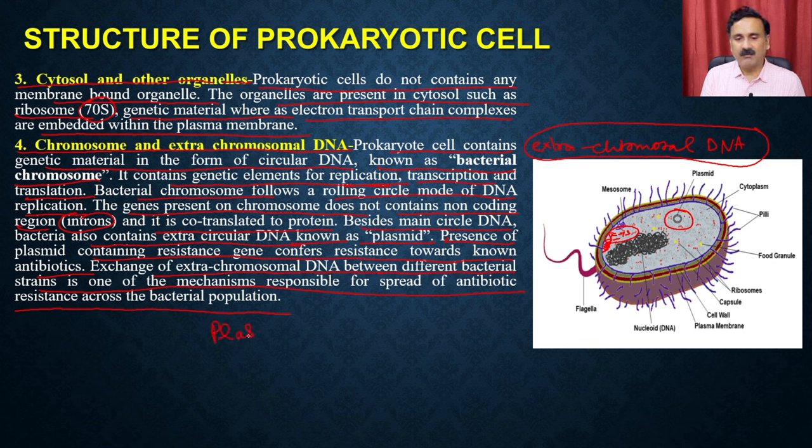Bacterial plasmids can acquire all three conformations under in vitro or in vivo conditions. For example, if you take circular DNA and add DNA gyrase, it creates turns and generates supercoiled DNA. But if you take supercoiled DNA and treat it with topoisomerase, it reduces the turns and converts it back into covalently closed circular DNA.